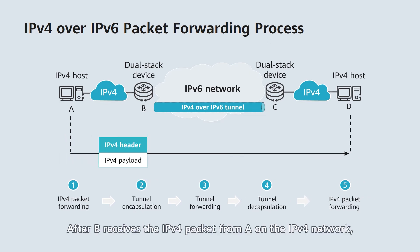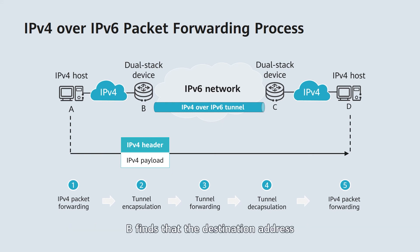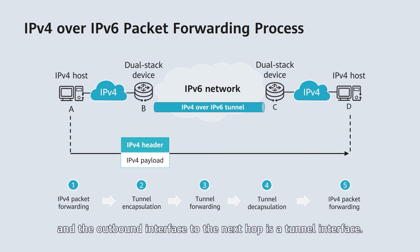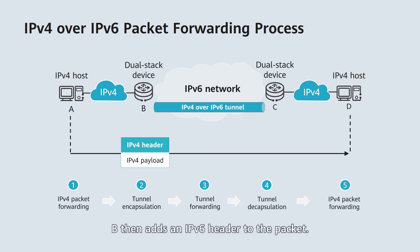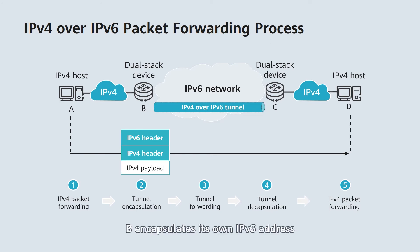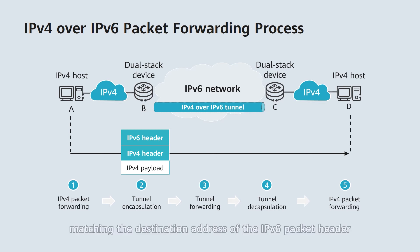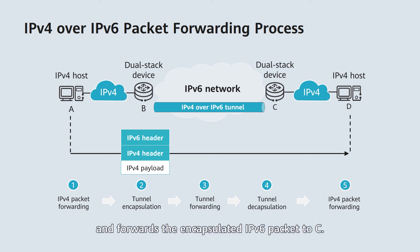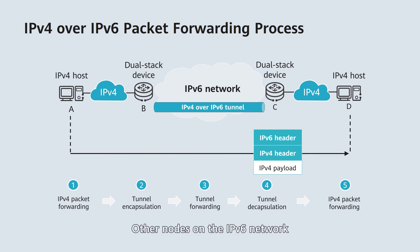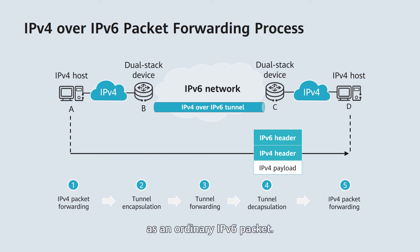After B receives the IPv4 packet from A on the IPv4 network, B finds that the destination address of the IPv4 packet is not itself, and the outbound interface to the next hop is a tunnel interface. B then adds an IPv6 header to the packet, encapsulating its own IPv6 address into the source address field and the IPv6 address of the peer border node C into the destination address field. Third, tunnel forwarding: B searches the IPv6 routing table for an entry matching the destination address of the IPv6 packet header and forwards the encapsulated IPv6 packet to C. Other nodes on the IPv6 network are unaware of the tunnel and process the encapsulated packet as an ordinary IPv6 packet.